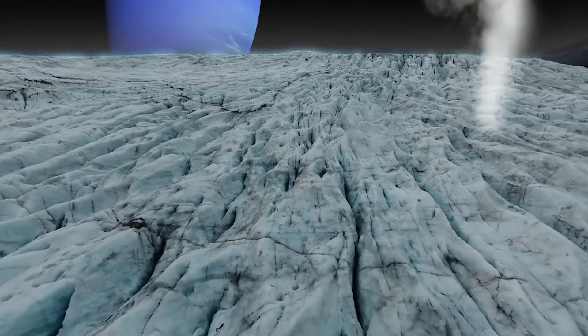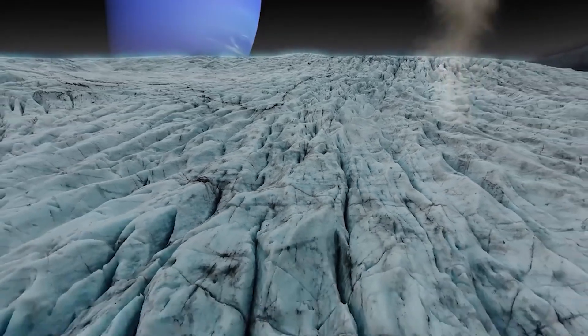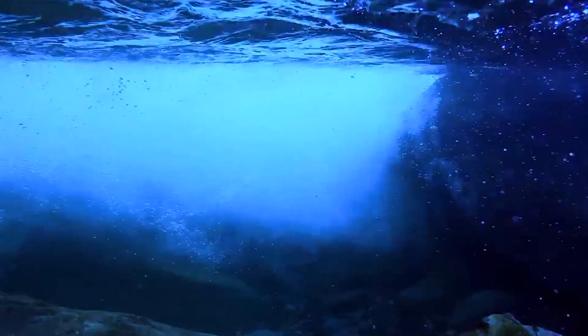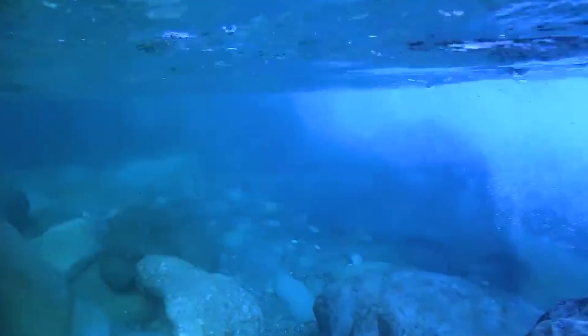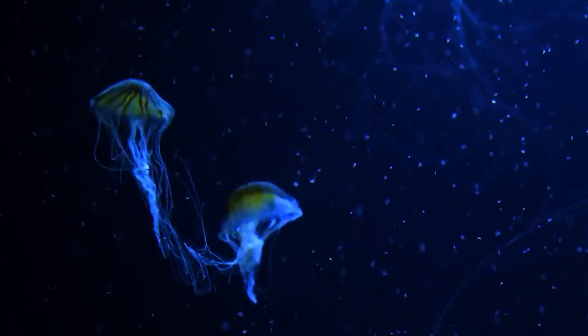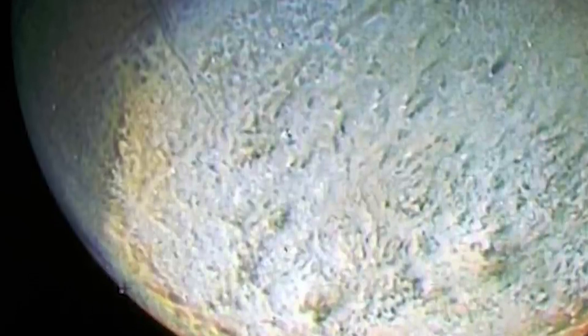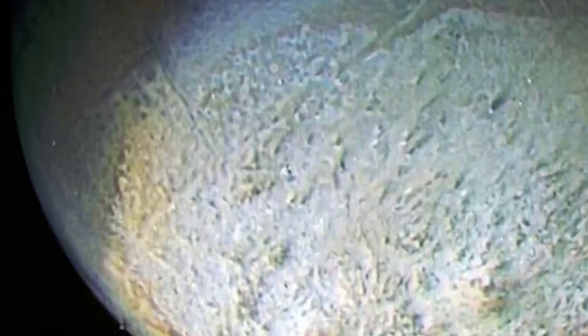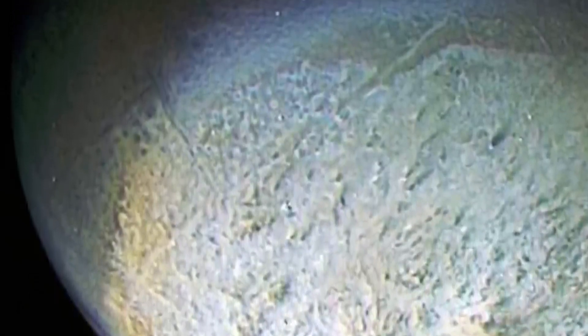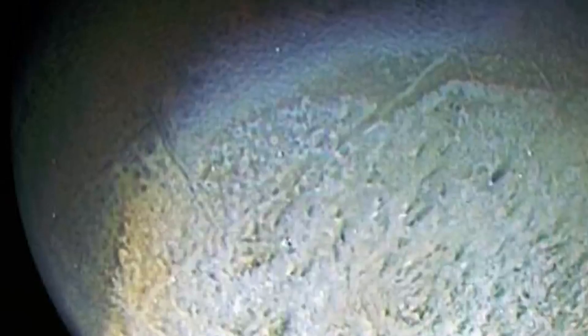It holds the title of the coldest geologically active object in the solar system. The surface temperature hovers around negative 391 degrees Fahrenheit, yet beneath its icy crust, there may be a subsurface ocean. The evidence for such an ocean comes from Triton's surface, which features a patchwork of ridges, plains, and other unusual patterns.